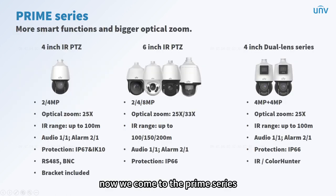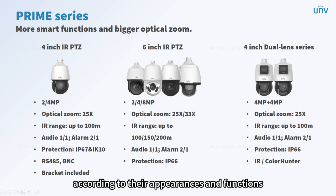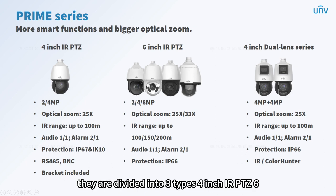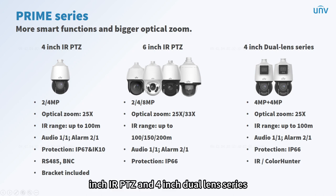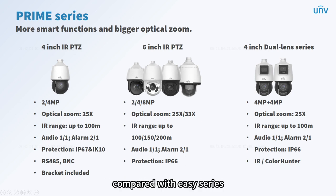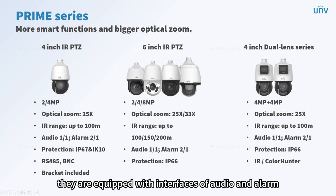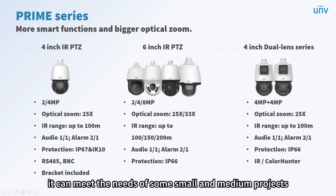Now we come to the Prime Series. In this series, we have 4-inch and 6-inch products divided into three types: 4-inch IR PTZ, 6-inch IR PTZ, and 4-inch dual-lens series. Most have optical zoom up to 25x with IR range up to 100 meters. Compared with the Easy series, they have more smart functions, bigger optical zoom, and are equipped with audio and alarm interfaces, meeting the needs of small and medium projects.